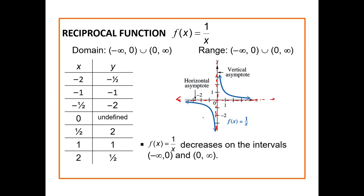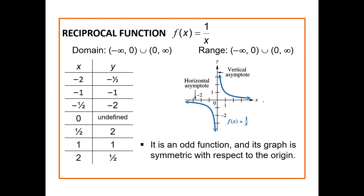Looking at the function, it decreases as you go from negative infinity to zero, and then it also decreases from zero to infinity. This graph is also an odd function because it is symmetric about the origin.